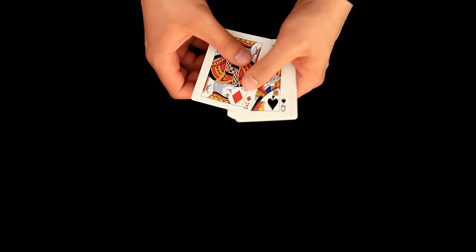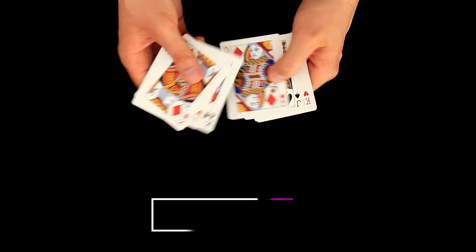For this trick I prepared all face cards. It means that I have here all jacks, queens, and kings as well.